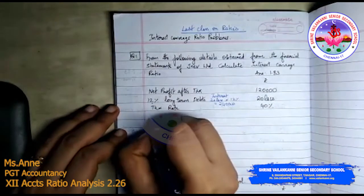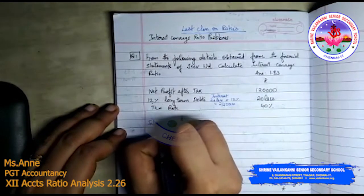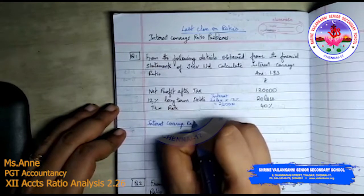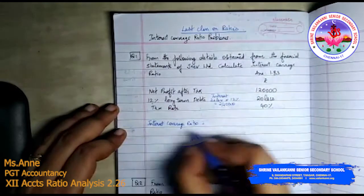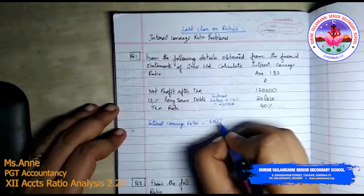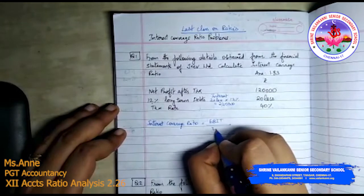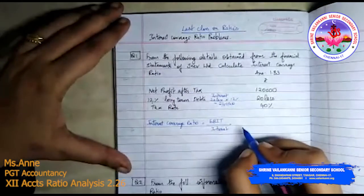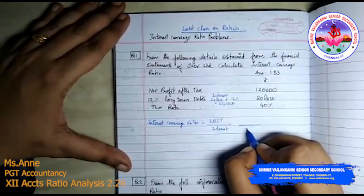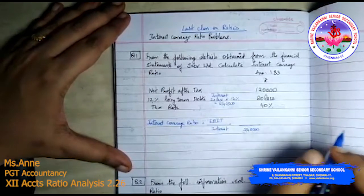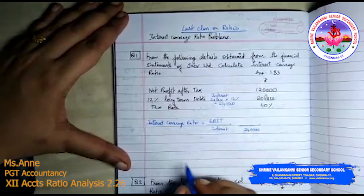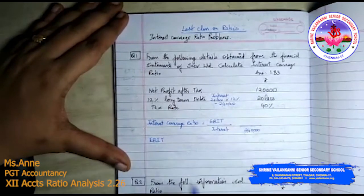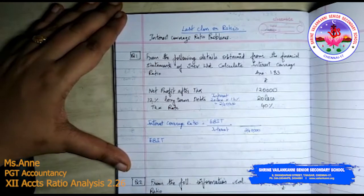Now, what is the formula for interest coverage ratio? Interest coverage ratio is equal to earnings before interest and tax divided by interest on long term debts. We have the interest part — 2 lakh 40,000. Now we need to find what is EBIT, earnings before interest and tax.